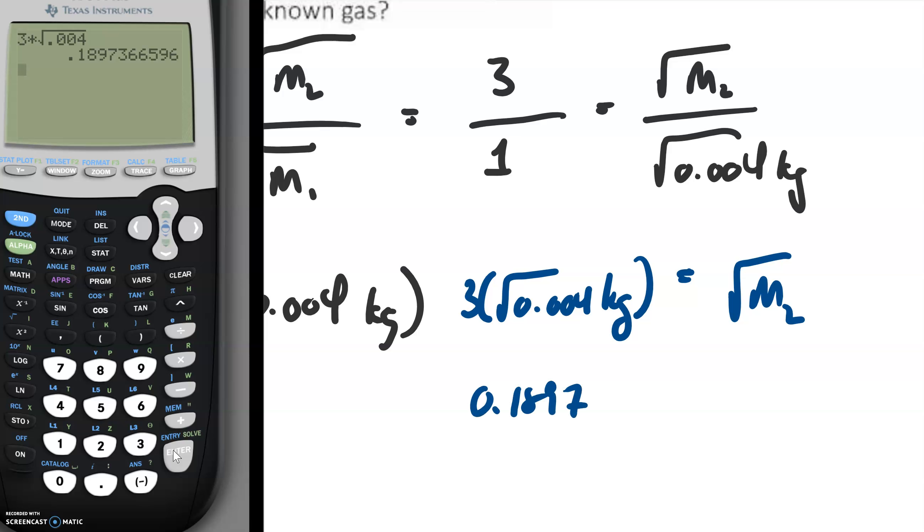So 0.1897 is equal to the square root of m2. And we want to get that by itself. So let's square everything. And this should be equal to the mass of our known.